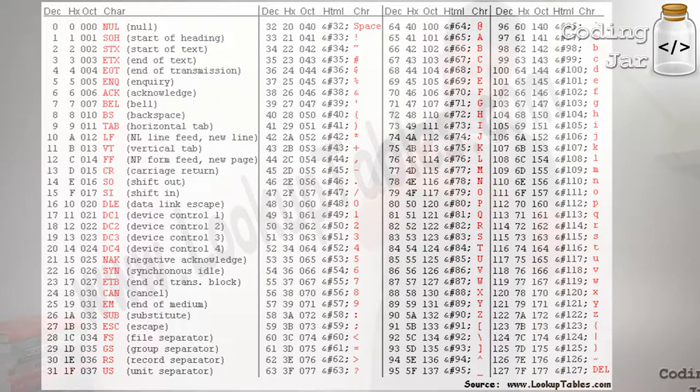So for instance, let me check. Let's go with capital A. Capital A is number 65. Capital B is number 66. Lowercase a is 97. Lowercase b is 98. There's a whole table where all this stuff is apparent and you can see what is assigned to what.